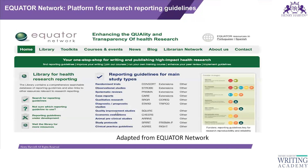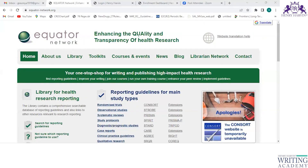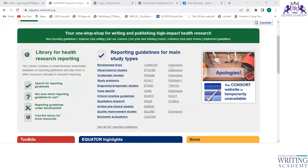Where are these guidelines available? They are available on a single platform known as the EQUATOR Network. EQUATOR is an umbrella organization that provides the list of all guidelines, specifying which study type each guideline is used for. EQUATOR stands for Enhancing the Quality and Transparency of Health Research. This is the same website shown in the screenshot on the slide — let me show you how to access it.